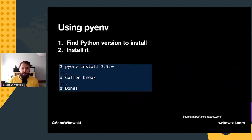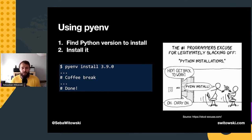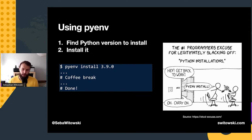Once you select a version you want to install, you can type `pyenv install` and the version number — then go make yourself a coffee, because the installation usually takes a few minutes. There are some additional libraries like OpenSSL that you can pre-install to make this process faster. If you don't have them, pyenv will try to download them each time you install a new Python version, so I suggest you take a look at the GitHub documentation.